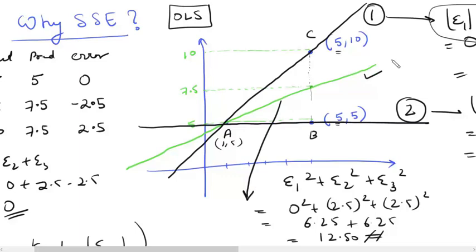That is why we use the sum of squared errors and not any other error parameter in ordinary least squares or in a linear regression algorithm.